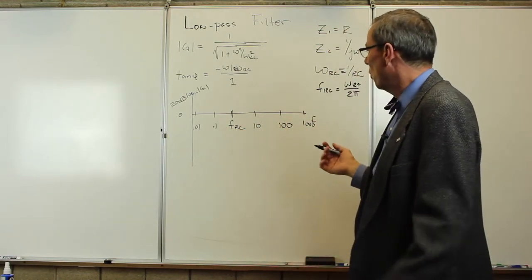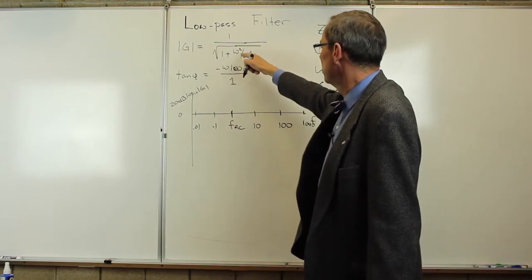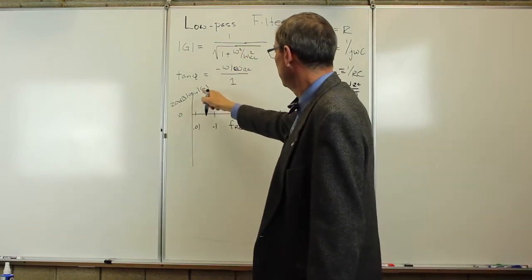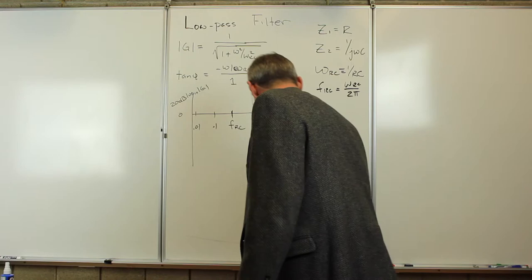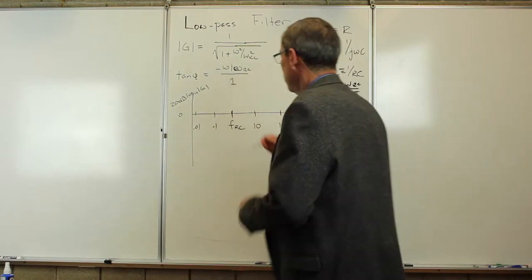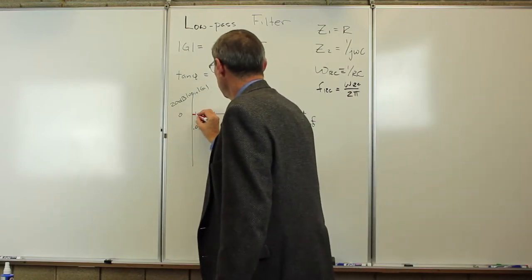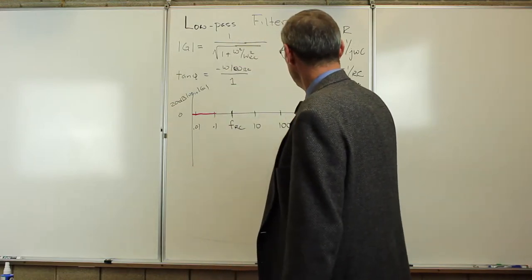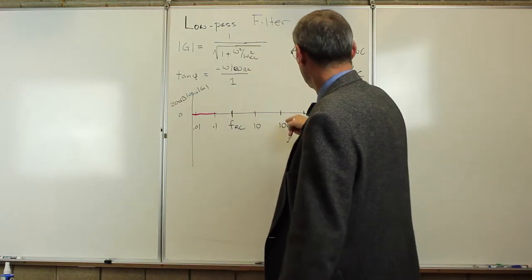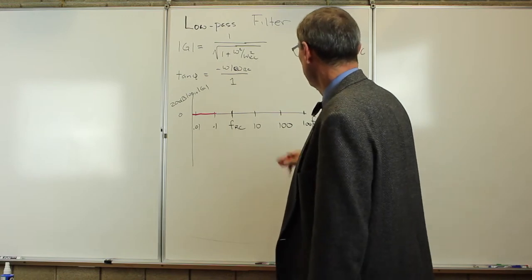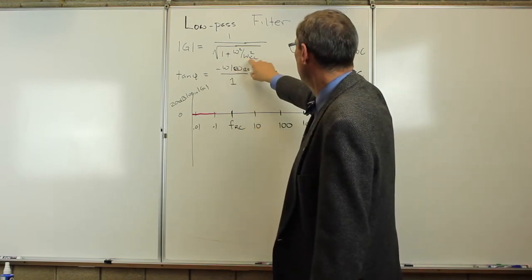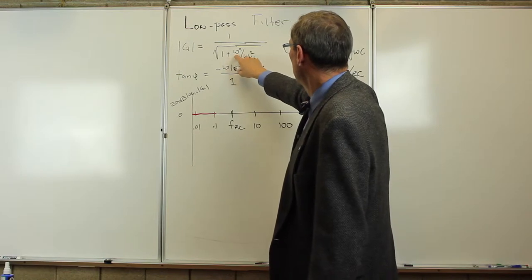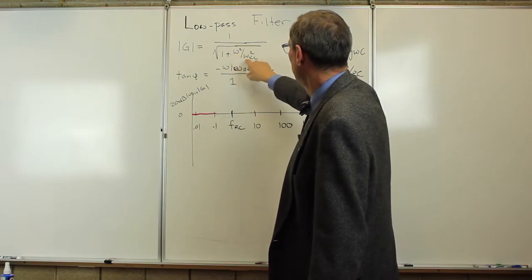We know for omega very small, this goes to 1, 20 dB log 10 of 1. So it comes in here, starts out at 0, runs up for a while. At high frequency, we know it's falling off like 1 over omega, so 20 dB per decade. When we're at the characteristic frequency, when we're at omega RC, we're going to get omega over omega RC.